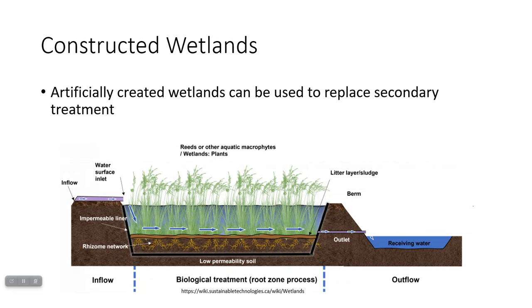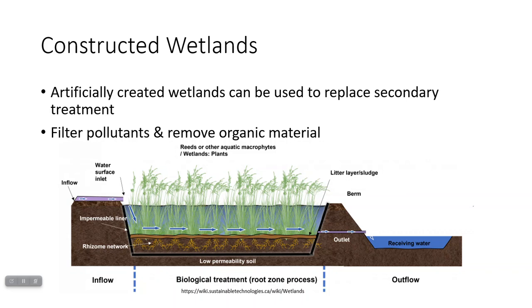Some places are using constructed wetlands — artificial wetlands that you can use in place of secondary treatment. The plants and the soil are going to help remove any organic material and pollutants, and the wetland plants are going to absorb nutrients. So by the time effluent is leaving, it should be low-nutrient and low-pollution and potentially releasable.